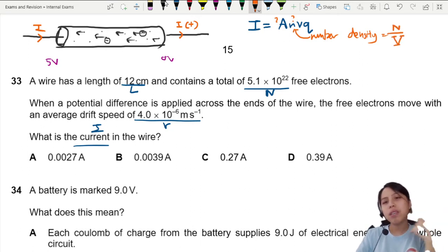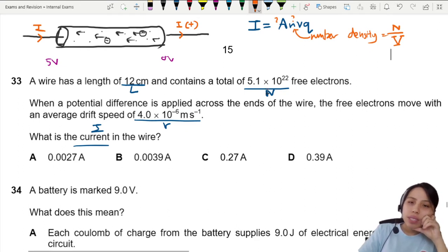They never give us that. They give us number of free electrons, which is another n, capital N. So what we need to do here is to do some adjustments to the data we have.